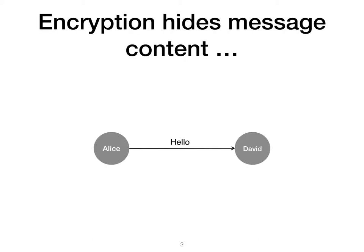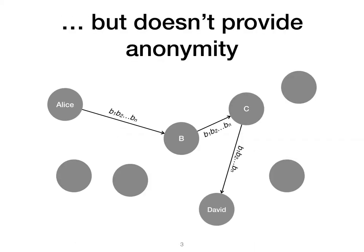Suppose that Alice wants to send a message to David anonymously. Encrypting the message can prevent an eavesdropper from learning the content of the message, but it won't prevent an adversary who can observe the network traffic from discerning that Alice is communicating with David. The adversary can simply trace the sequence of bits coming out of Alice's computer and going into David's. So what can Alice do to prevent the adversary from learning who she is communicating with?